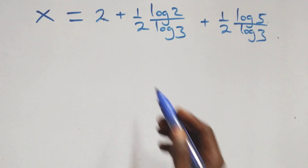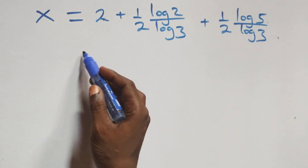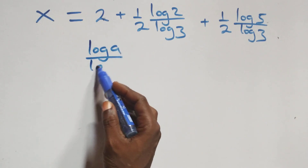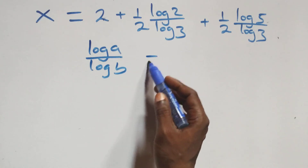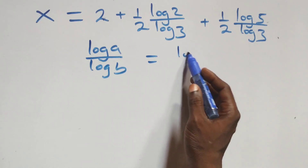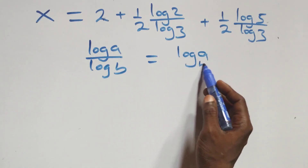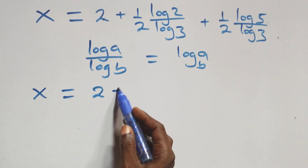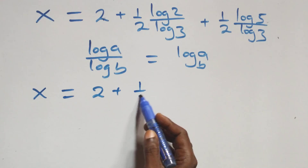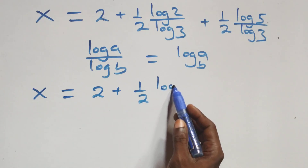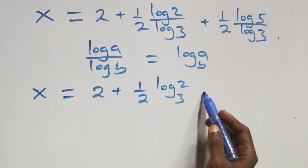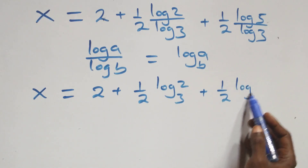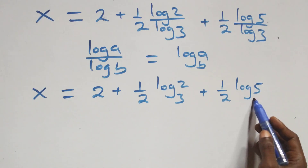We can also write this as x equals to 2 plus one half times log 2 over log 3, plus one half times log 5 over log 3. Next step, we apply the change of base rule — when we have log a over log b, this is the same as log a to base b. That is x equals to 2 plus one half log₃2 plus one half log₃5.